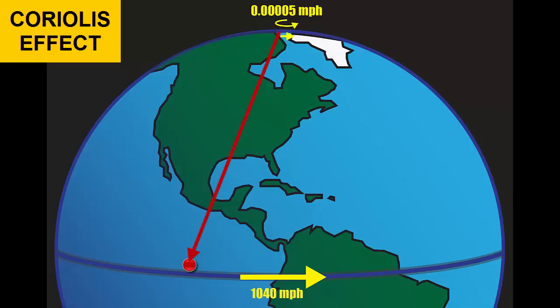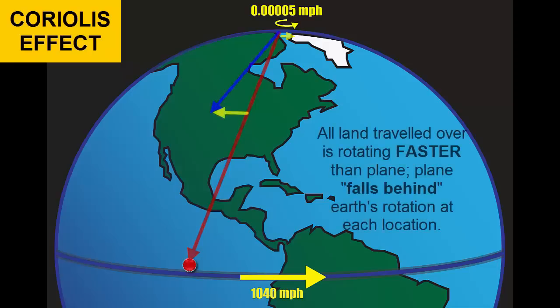Conversely, if the plane takes off from the North Pole and heads southward, it lifts off with a slow rotational speed. As it travels south, the objects below it are rotating more quickly and the plane will end up west of its target unless corrections are made.